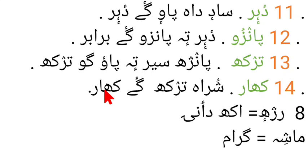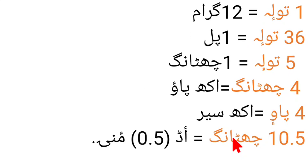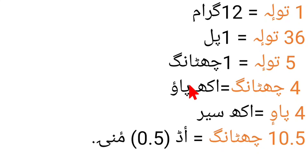Shura trak gai khaar. Raj 21 gram beraabar aasaan. Maash 26 grams beraabar aasaan. Tolgo bhaan graman beraabar. Shetra tol gai 8.5. 5 tol gai 8.6. 4.6 gai 8.5. 4.5 gai 8.6. 7.6 gai 8.5.